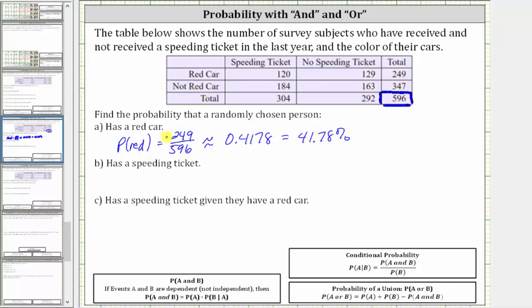For part B, we want to find the probability that a randomly chosen person has a speeding ticket. Well, we find the speeding tickets in this column here. A total of 304 people have a speeding ticket out of the 596.